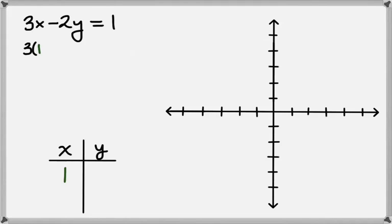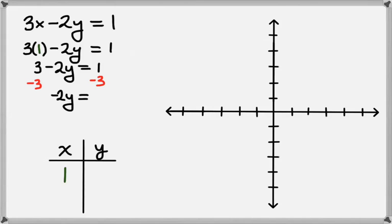So we have 3 times 1 minus 2y equals 1. That's going to leave us with 3 minus 2y equals 1. Now we want to solve for y. So let's subtract 3 from both sides. We'll have minus 2y, and that equals 1 minus 3, which is negative 2. Now we can divide both sides by negative 2, which gives us y equals 1. So the point 1, 1 is going to be on the graph of our line.